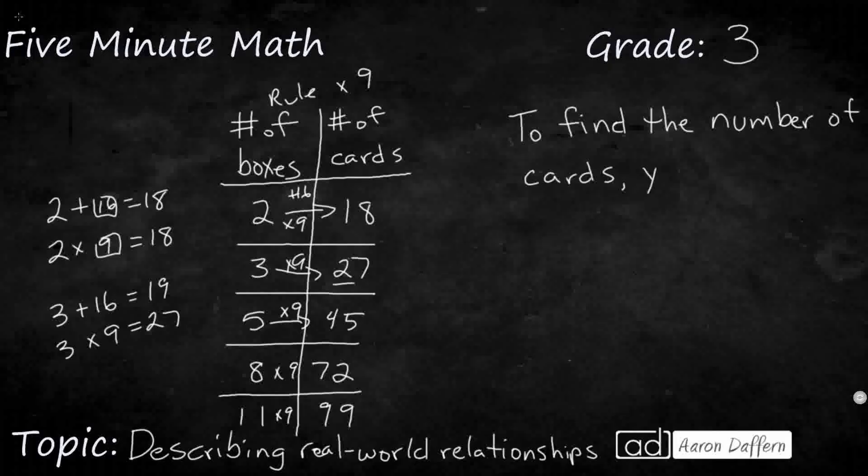Well, we could say, you have to... Well, what was the math we did? Well, we did the multiplied. So we multiply the... And then what do we multiply? We multiply the number of boxes by what? Well, we multiply the number of boxes by 9.